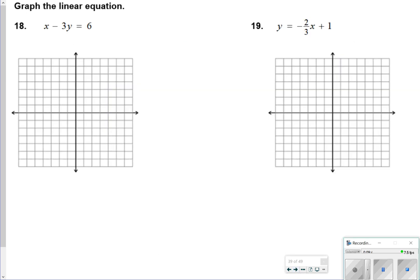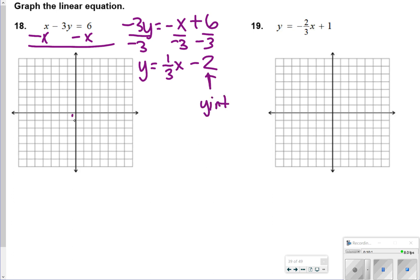For number 18 to graph the linear equation, what I did is I got y by itself to put it in slope-intercept form. So I subtracted my x's from both sides first. So I get negative 3y is equal to negative x plus 6. And then you're going to need to divide everything by negative 3, which means y is equal to positive 1 third x minus 2. So the minus 2 is your y-intercept. So I'm going to go down here on my y-axis and find negative 2. And then your 1 third, remember, is your slope, which is rise over run. So I'm going to rise 1 and run 3. So rise 1, 1, 2, 3, run. Rise 1, 1, 2, 3, run. And I'm just going to erase my tracks here so you can see the process of how I got there. And then connect my points. So this one's not a really steep slope because it's a small fraction.